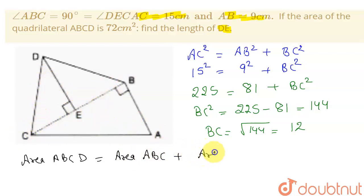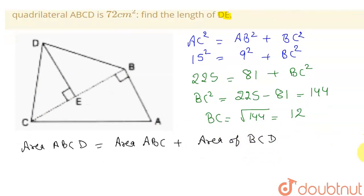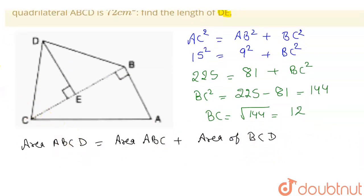Now the area of ABCD is given to us as 72 centimeter square. And area of triangle ABC, this I can write as half of the base which will be BC into height which will be AB. And area of this triangle BCD I can write as again the base will be BC and its height will be DE.